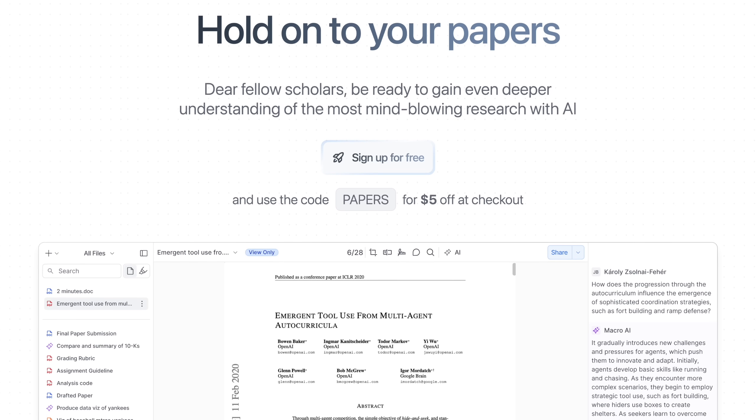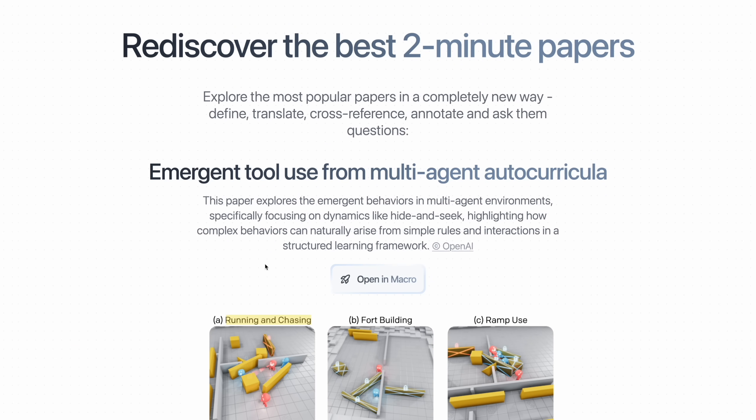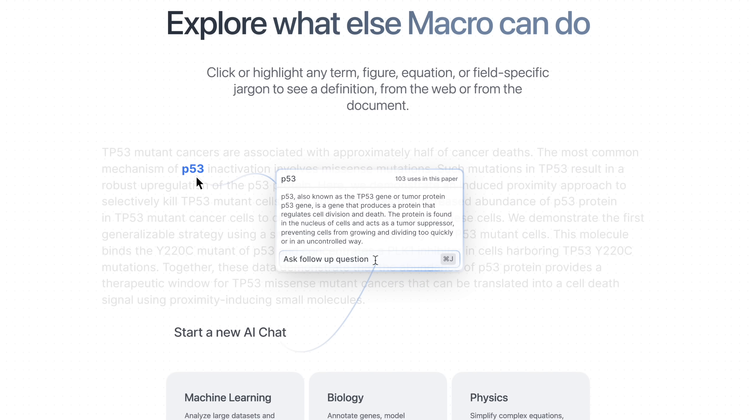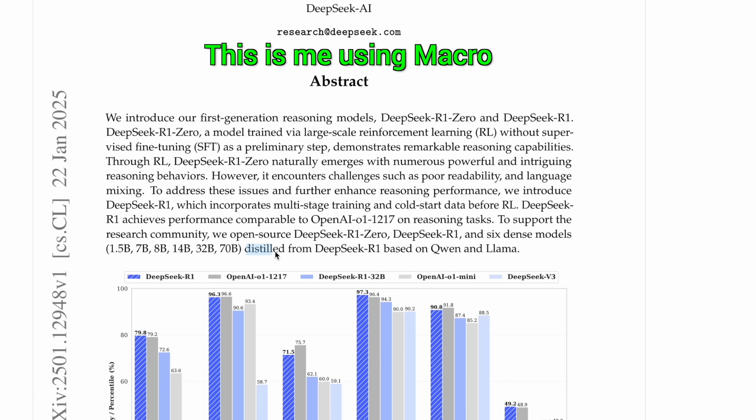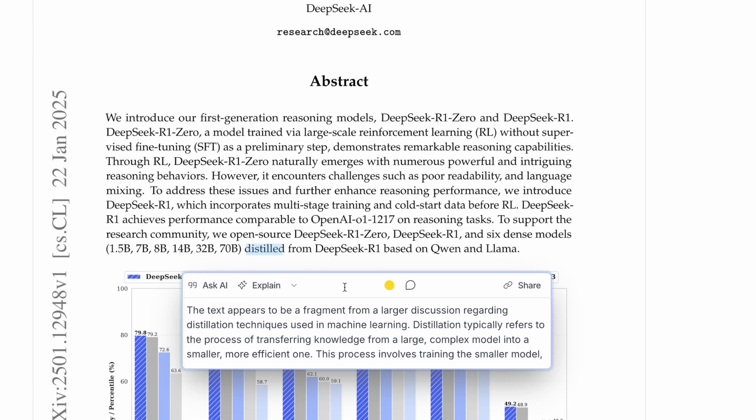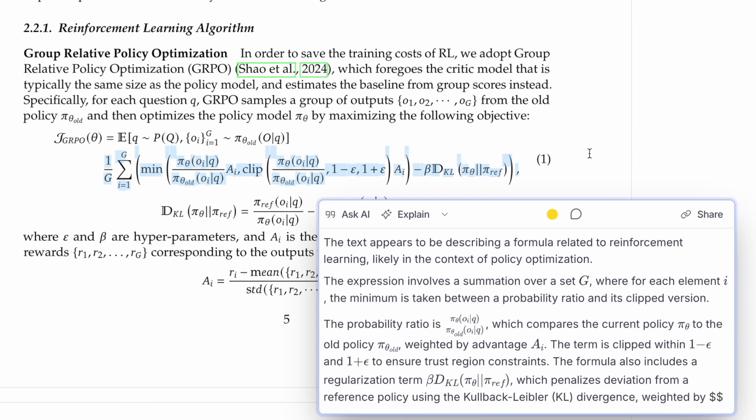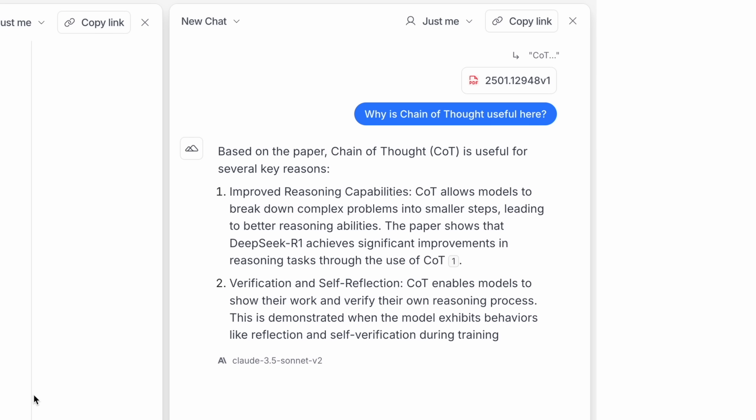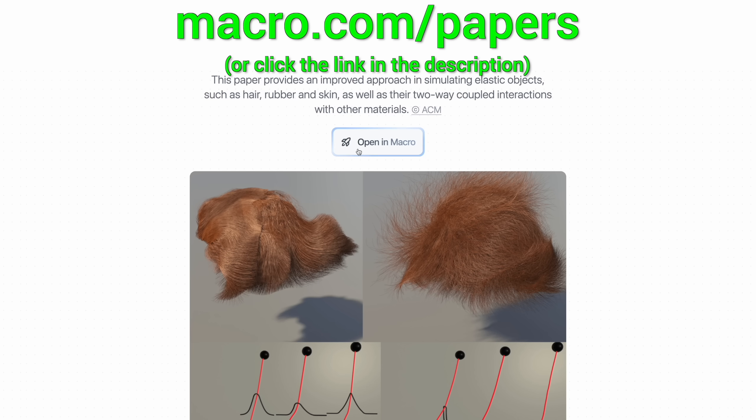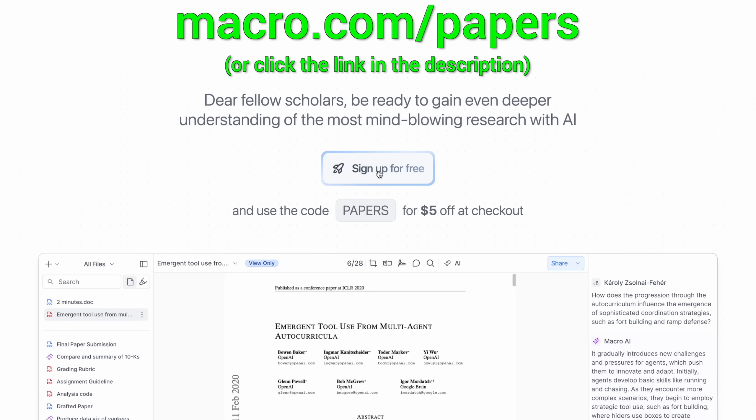Fellow scholars, if you're like me, it takes you a while to truly understand the paper, especially when it's not right in your area. Macro.com is a new AI document reader that gives you superpowers. Click on any term or figure and it explains it to you without leaving your page. You can even talk to the paper or ask questions too. Try it for free at macro.com/papers and get five dollars with the code PAPERS.